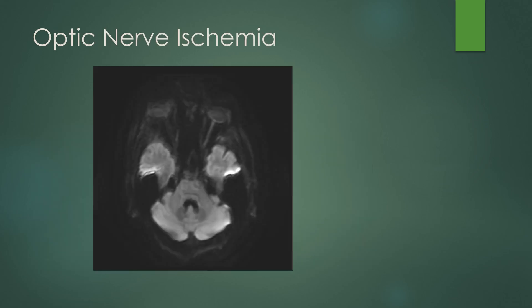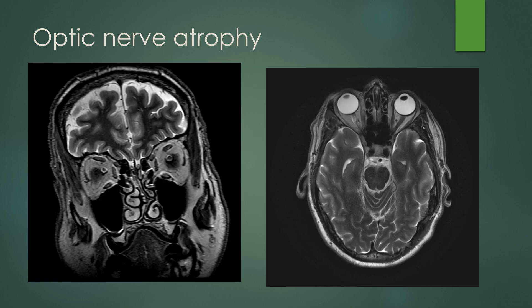Optic nerve ischemia, specifically acute ischemic optic neuropathy (AION) — sometimes you get lucky and on DWI you can see abnormal restricted diffusion within the optic nerve itself. Here, they had sudden onset of left eye vision loss and you see restricted diffusion in the optic nerve, while the normal right eye shows no abnormal restricted diffusion. Many times on imaging of AION you will not see any imaging findings. If you don't catch it in the acute phase with restricted diffusion, what you may see instead is optic nerve atrophy.